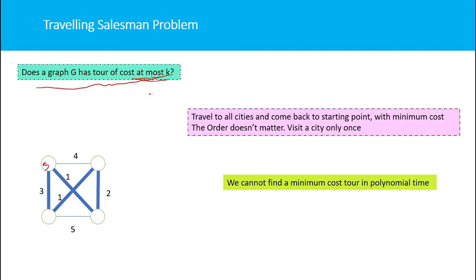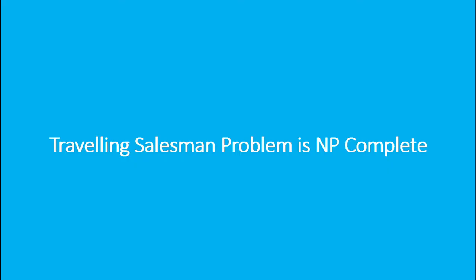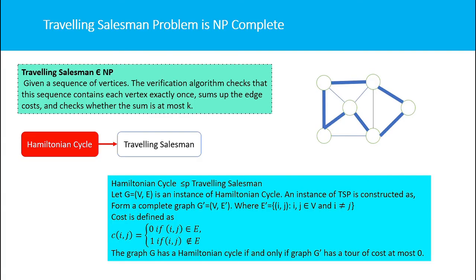The Traveling Salesman Problem is an NP-complete problem. First, we prove TSP belongs to the class NP. Suppose you are given a sequence of vertices — we check whether these vertices form edges of the graph or not, and we compute the total cost of the edges.